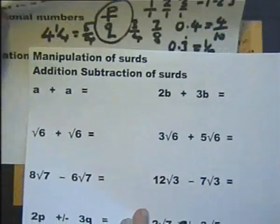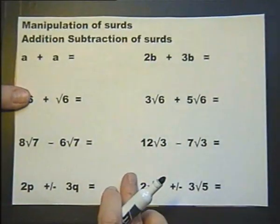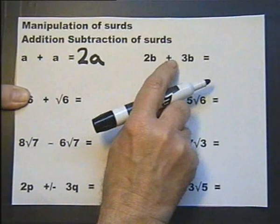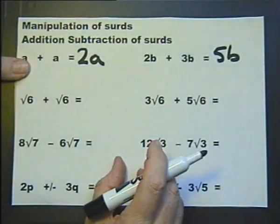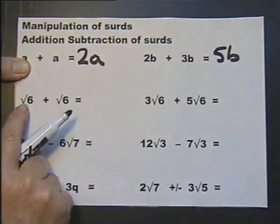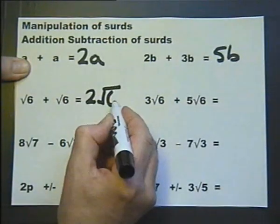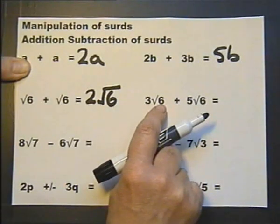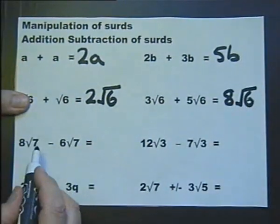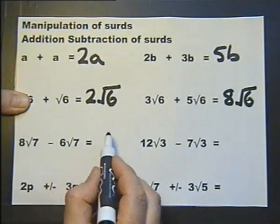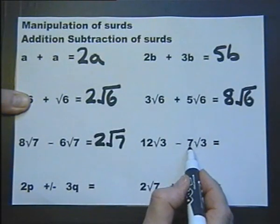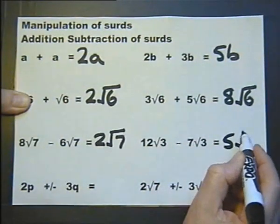So let's look at manipulating surds. First, addition and subtraction — a little bit of algebra. If we do a plus a, we get 2a. Or 2b plus 3b, we get 5b. We can deal with surds in an extremely similar way. The square root of 6 plus the square root of 6 gives 2 square roots of 6. Three square roots of 6 plus five square roots of 6 gives 8 square roots of 6. For subtraction: 8√7 minus 6√7 leaves 2√7, and 12√3 minus 7√3 leaves 5√3.